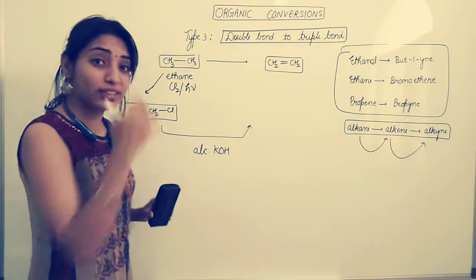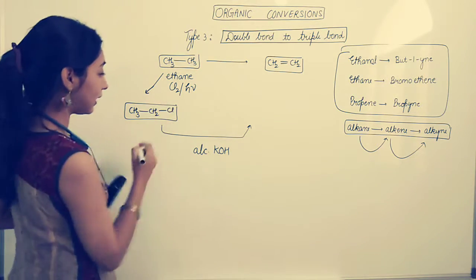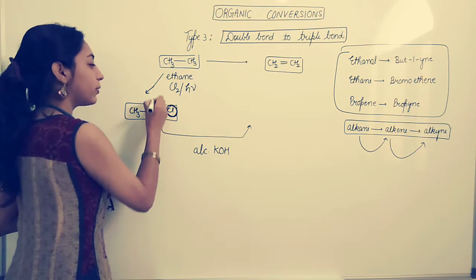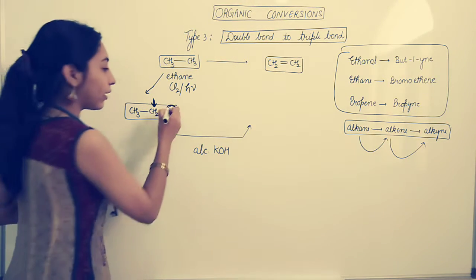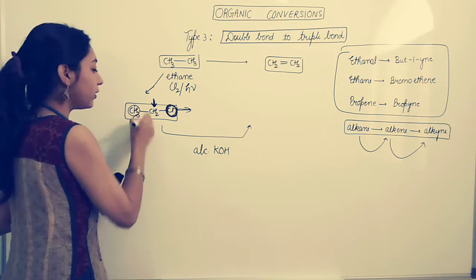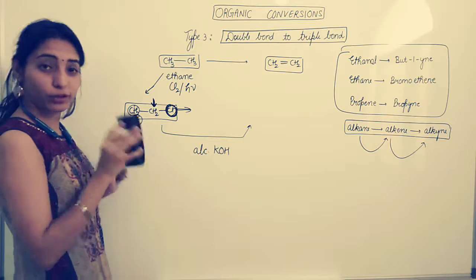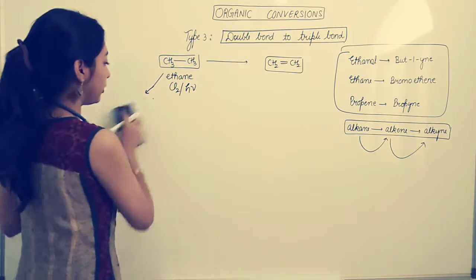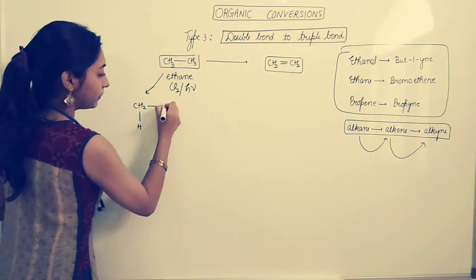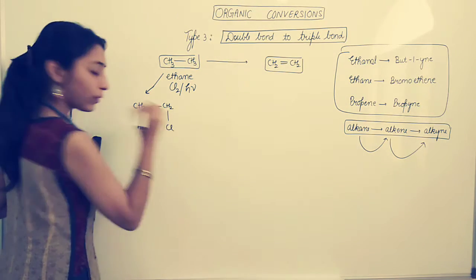So you remember, I am not using aqueous KOH. Reason being because it will undergo substitution. Rather we are using alcoholic KOH. Now what does alcoholic KOH do? This we did in the last video also. Once again I tell you, this is chlorine, this is a carbon which has chlorine. Now this chlorine will go away from this carbon and from the adjacent carbon, one hydrogen will go away.